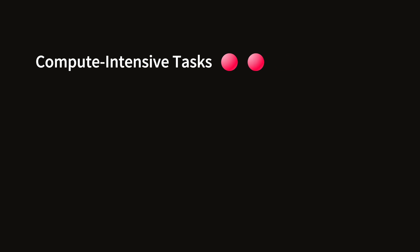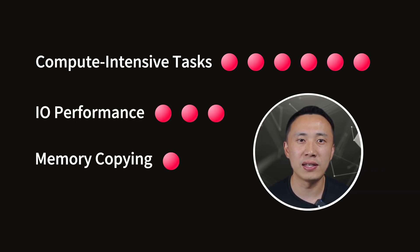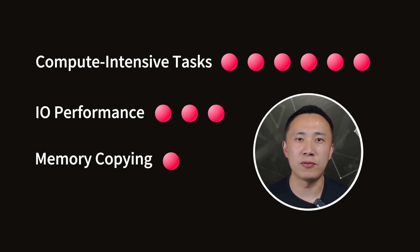Now, here's the kicker — not all CPU consumption is created equal. We've got approximate weighting for you: six for compute-intensive tasks, three for IO performance, and one for memory copying. That's right, some tasks pack a heavier punch than others. So there you have it, folks — the scoop on CPU consumption and why it matters for your YoloBox Ultra journey.